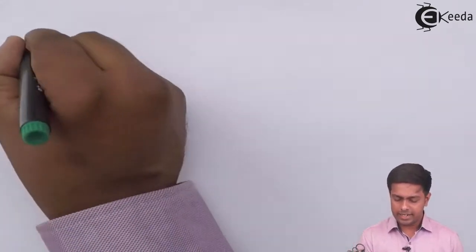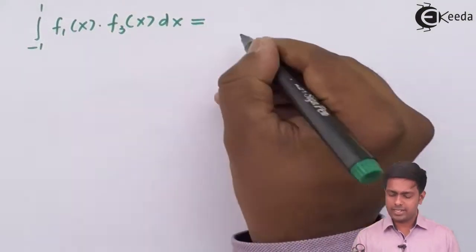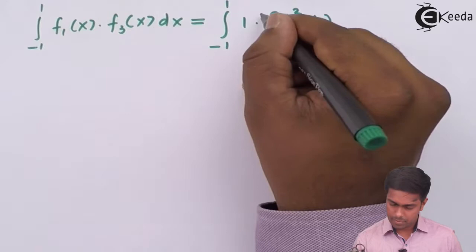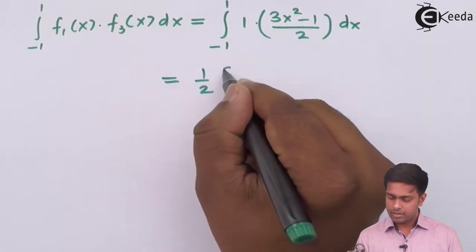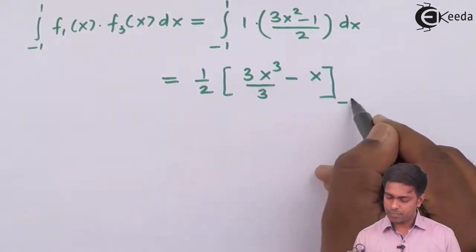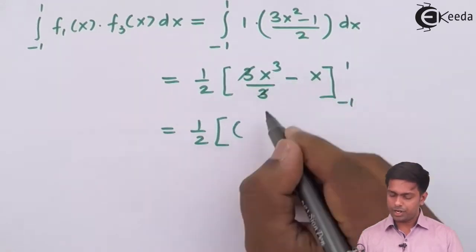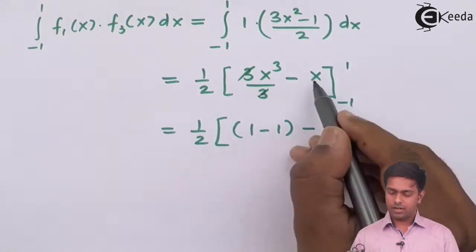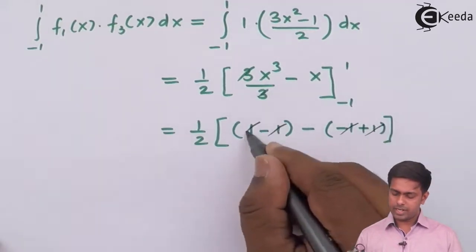Now let's find the last cross-product: integral from −1 to 1 of f1(x)·f3(x). Since f1(x) = 1 and f3(x) = (3x²−1)/2, this becomes (1/2)∫(3x²−1)dx = (1/2)[x³ − x] from −1 to 1. After 3 and 3 cancel: putting 1 gives 1−1 = 0; putting −1 gives −1−(−1) = 0. So 1−1 cancels and 1−1 cancels, giving an answer of 0.